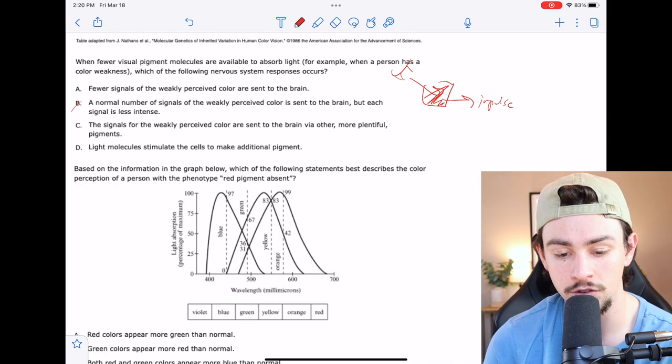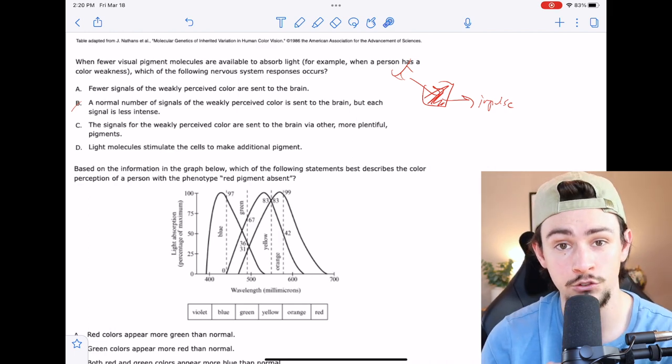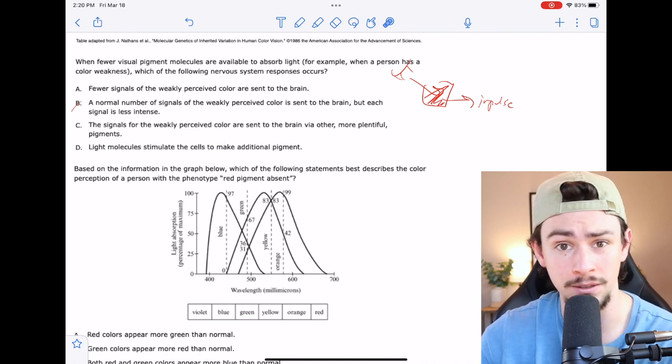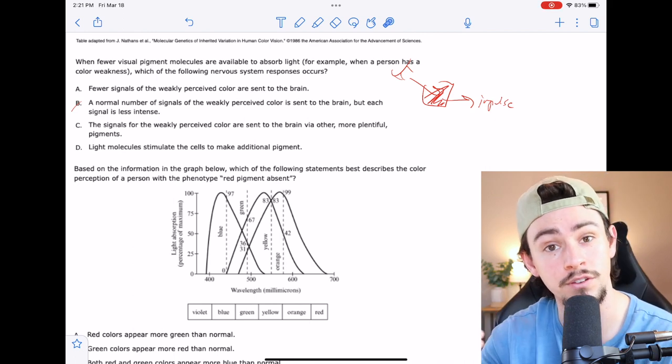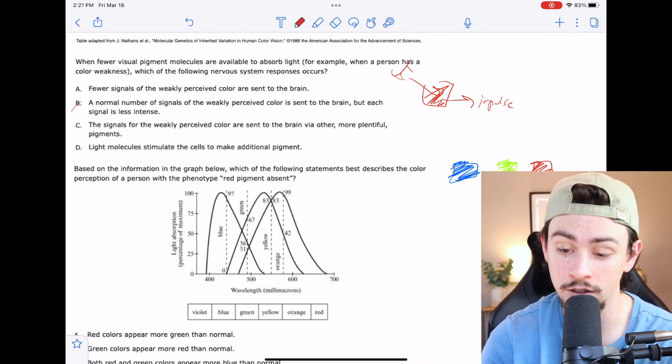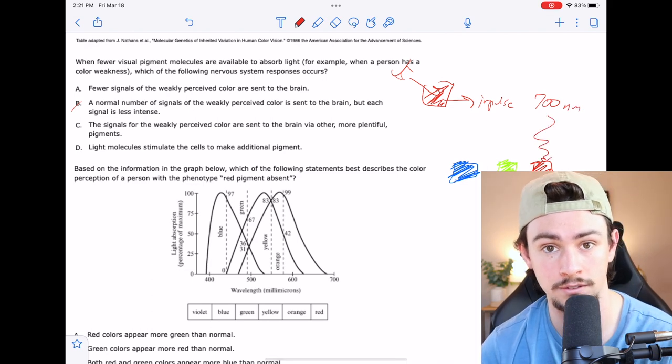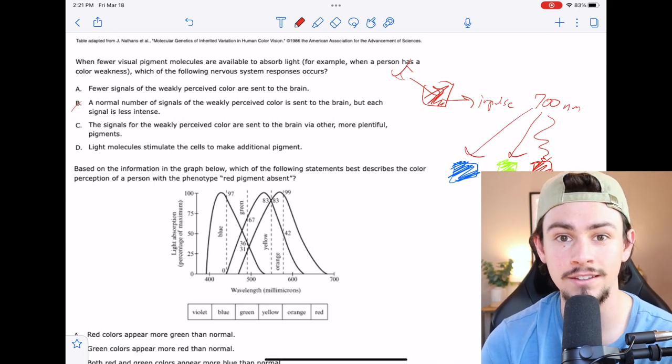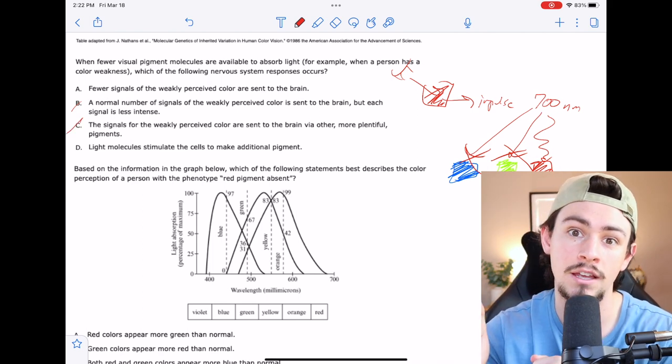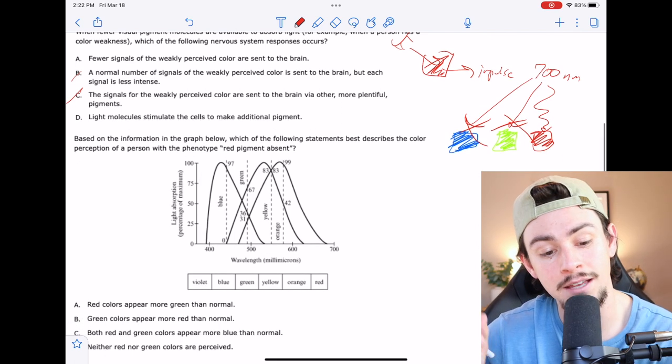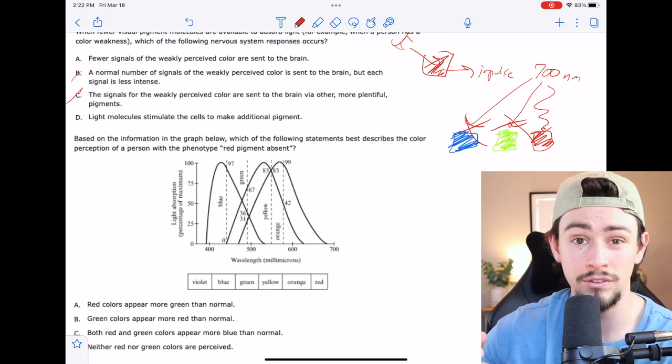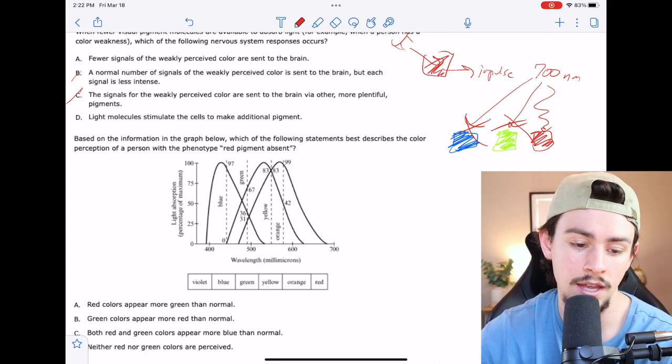C says the signals for the weakly perceived color are sent to the brain via other, more plentiful pigments. C is assuming that just because we have one pigment that isn't going to participate very much, that the other pigments will pick up the slack. But that's not the way it works because each pigment is going to absorb a specific wavelength. For example, if we have a red, green, and blue pigment, and we have a wavelength coming in around 700 nanometers, it is only going to be absorbed by this red pigment. Is it going to hit the other pigments? Yeah, they're right next to each other. But they're not going to absorb it. So maybe not to C because each pigment is specific for a specific range of wavelengths. D says light molecules stimulate the cells to make additional pigment. Well, if that's the case, then colorblindness would not be an issue. If light told us to make more pigment, we wouldn't have a deficiency to begin with. So you're only left with answer choice A.